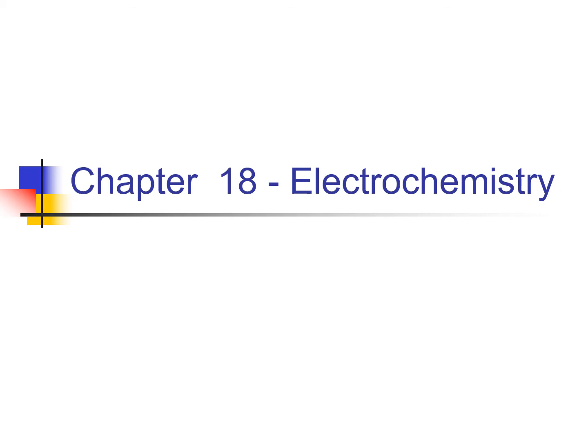We are starting here with Chapter 18, electrochemistry. This is probably one of my favorite chapters of the year. To talk electrochemistry and to get into what's going on with electricity and what that has to do with chemistry, we need to first talk about oxidation-reduction and oxidation numbers.